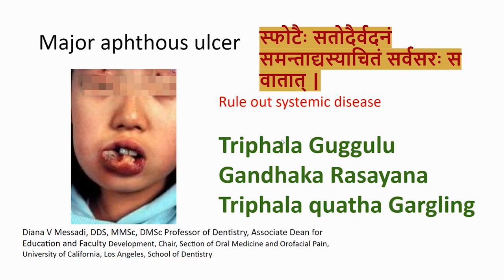When the underlying pathology is identified, the management would be based on treating the underlying pathology specifically. Once you have managed that underlying pathology, then as a specific management for the stomatitis, I would prefer Triphala Kwata gargling and Kukul-Gandakrasa. This has all the features of the typical Vataja variety — Sphotha, Sadaha, Vedana, Samanta, Sarvajvara, and Sarvagata features are seen.